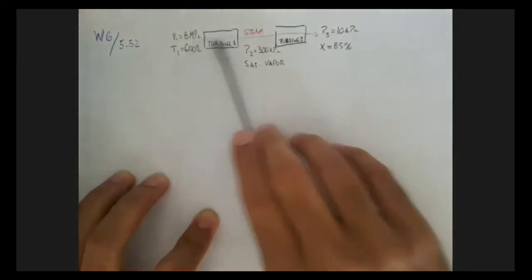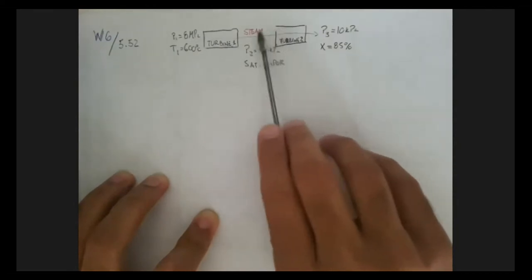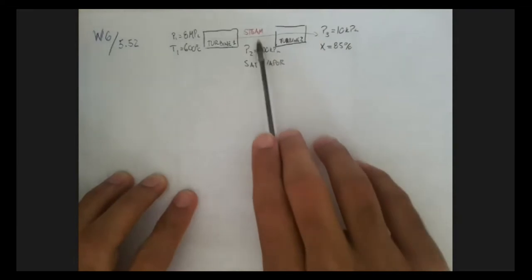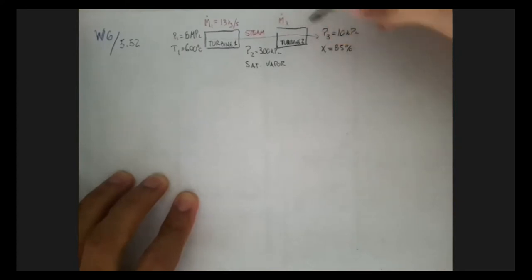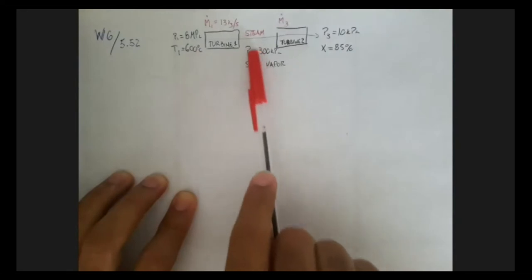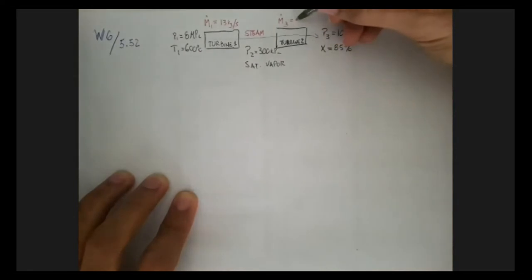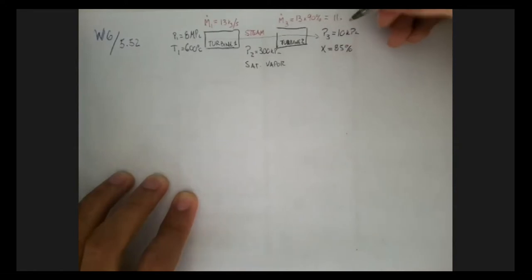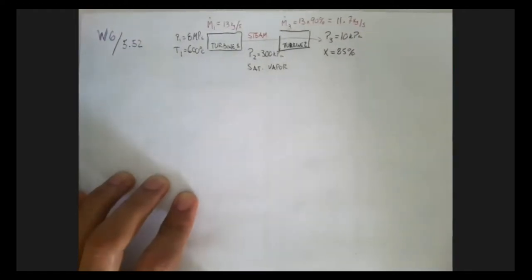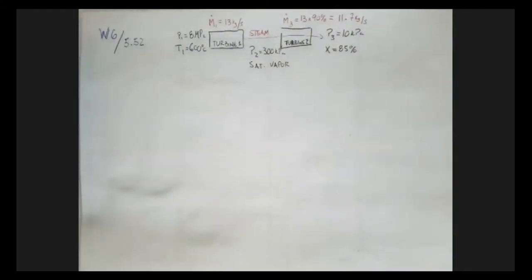What's different here is that we have a loss of mass — mass is still conserved, but part of the mass leaves the system between the two turbines. The initial mass flow rate m1 is 13 kilograms per second. The mass entering the second turbine, m3, is 13 times 90% — since we lose 10% — which equals 11.7 kilograms per second.